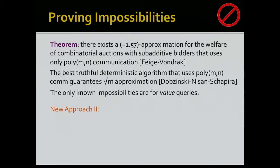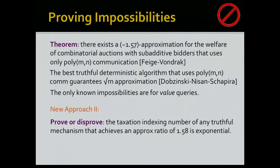The second approach is more direct: give a lower bound on the taxation indexing complexity. Since the communication complexity bounds the taxation indexing complexity from above, you just need to show that the taxation indexing complexity of every good approximation algorithm is huge — and you're done. In both approaches we can stop thinking about truthfulness and just reason about conventional properties of approximation algorithms, possibly simultaneous ones. That's all that is left to prove in order to prove the gaps.